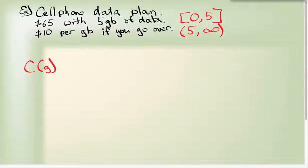So if we write that out as a piecewise function, I've got two intervals. In our first interval, the cost of that cell phone plan is sixty-five dollars, and that is if G is an element of zero to five.